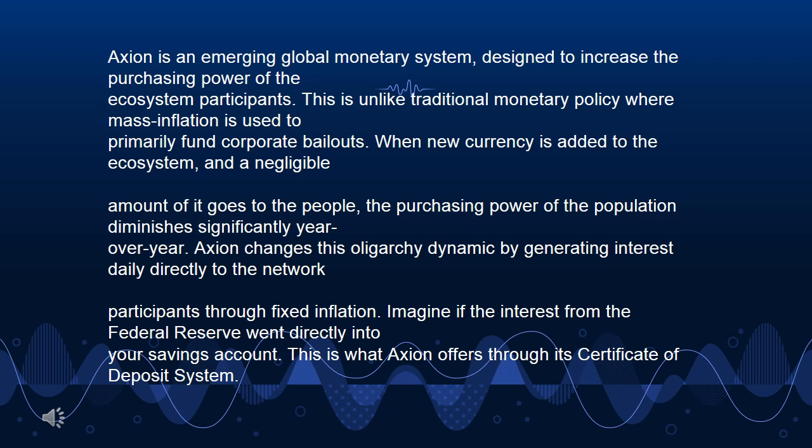The purchasing power of the population diminishes significantly year over year. Axion changes this oligarchy dynamic by generating interest daily directly to the network participants through fixed inflation. Imagine if the interest from the Federal Reserve went directly into your savings account — this is what Axion offers through its certificate of deposit system.